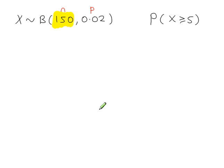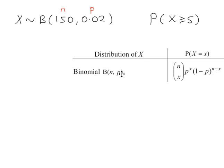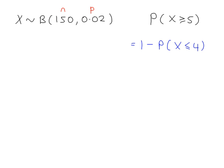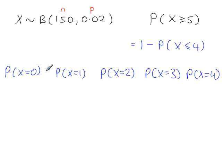n equal to 150 is not in the binomial tables, so instead we could try using the binomial formula to work out this probability. To reduce the number of calculations, we could work out 1 minus the probability that x is less than or equal to 4. But using the formula, we still need to work out P(x=0), P(x=1), P(x=2), P(x=3), and P(x=4), and then add them all together. As you can see, there are 5 calculations to do using the formula, which is too excessive.